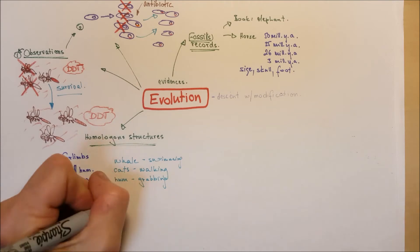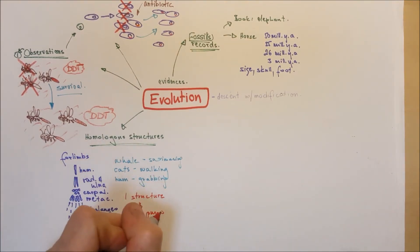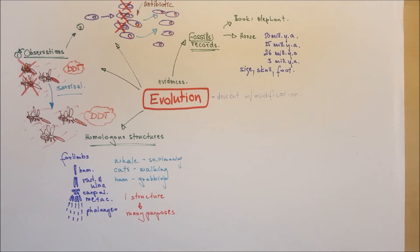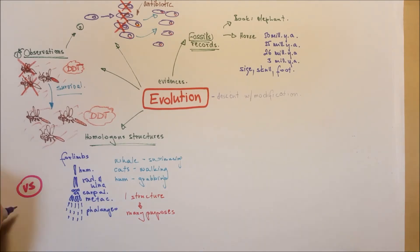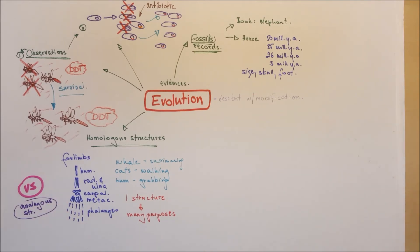Now, one structure used for many purposes, that's a homologous structure that supports the evolution. We have to talk about, on the other hand, the analogous structures. Analogous structures is different from homologous.